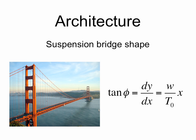If you want to be an architect, you better know your trigonometry. Architecture is all about balancing forces and keeping structures stable. For example, if you want to build a suspension bridge, how do you calculate the shape of the wires that hold the bridge up? Well, you'd use trigonometry.